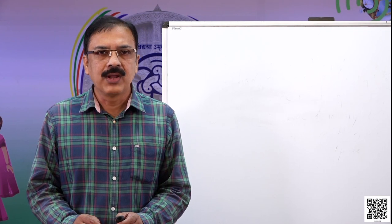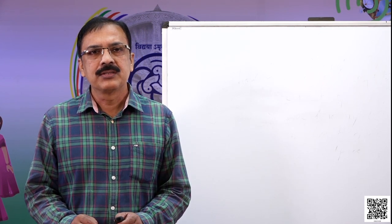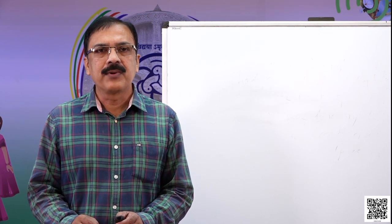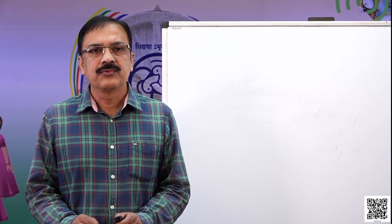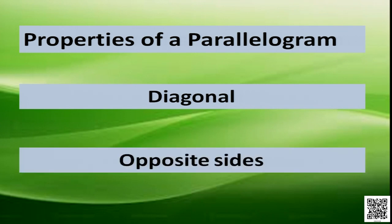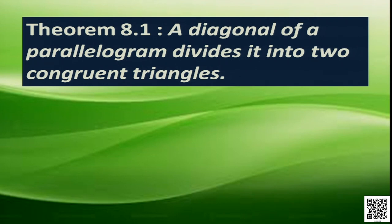Today we are going to discuss some more properties of quadrilaterals — one based on diagonals, and the other based on opposite sides. Let us state one of these properties as a theorem. Theorem 8.1: A diagonal of a parallelogram divides it into two congruent triangles.